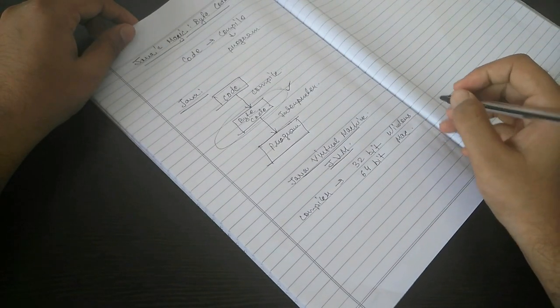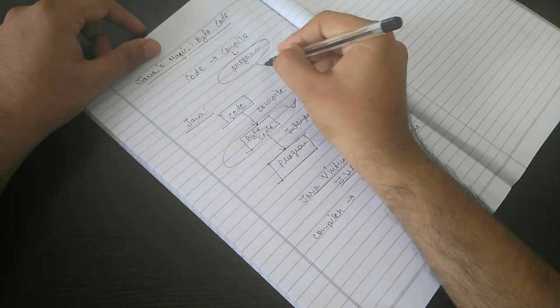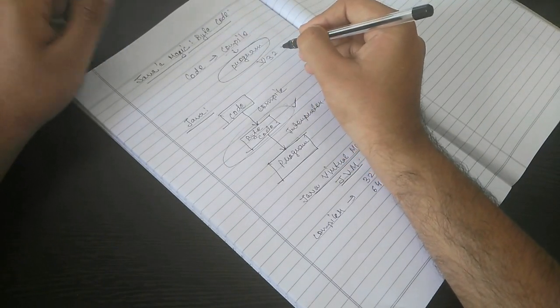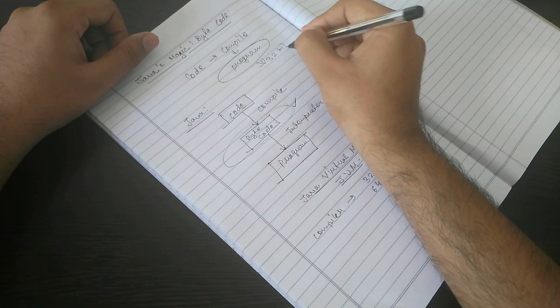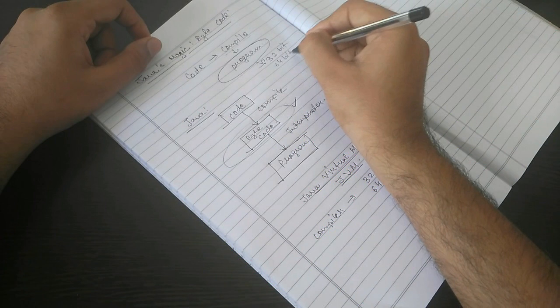In another language, when you compile the code, that program is suitable for only that type of compiler. If it is compiled in 32-bit system, it will only run in 32-bit system. If it is compiled in 64-bit system, it will only run in 64-bit system.